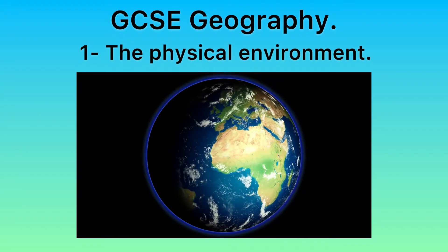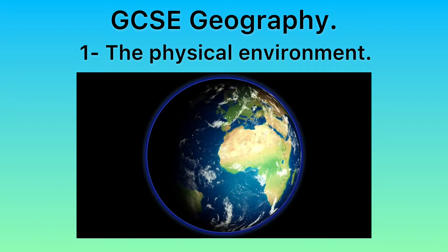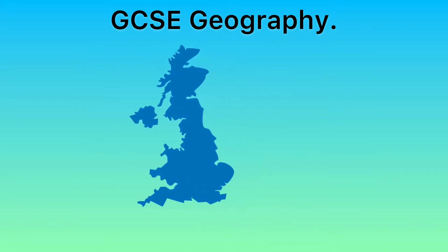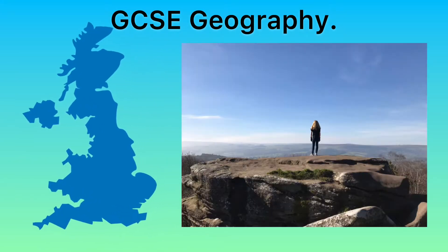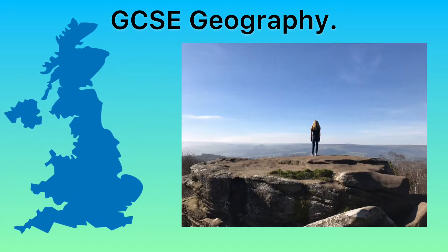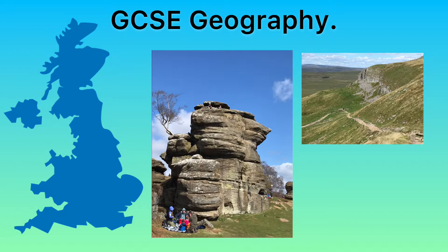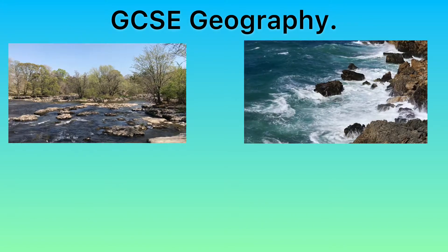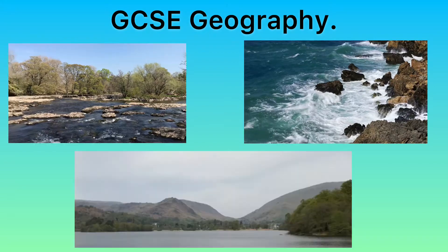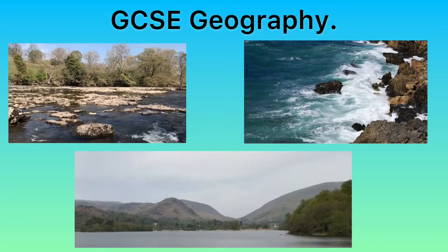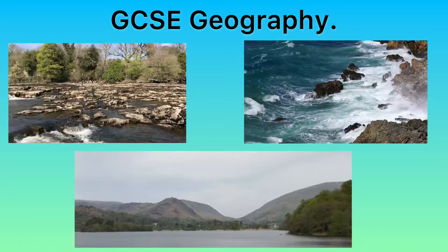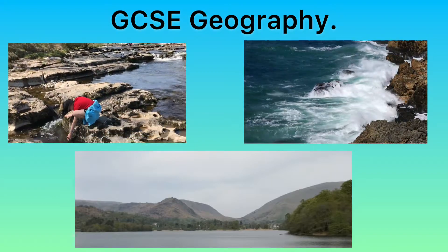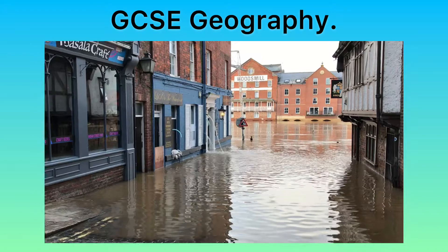Let's look at the physical environment first. In section A you will explore the changing nature of the UK's physical landscape, studying the geological development of our uplands and lowlands, as well as two topics from river landscapes, coastal landscapes and glacial landscapes in the UK. We will examine the nature of these physical landscapes and try to understand how they develop and change and how they can affect those who live nearby.